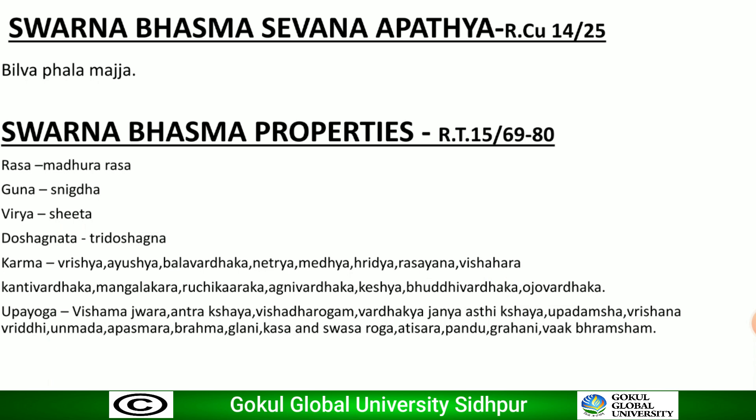The properties of Swarna Bhasma are: Rasa — Madhura; Guna — Snigdha; Veerya — Shita; Doshaghna — Tridoshagna. Karma includes Vrushya, Ayushya, Bala Vardhaka, Netriya, Medhya, Hruddhya, Rasayana, Vishahara, Kanti Vardhaka, Mangalakara, Agni Vardhaka, Keshya, Buddhi Vardhaka, and Ojo Vardhaka. It is commonly used in Vishamajwara, Akshaya, Visha Roga, Janya Sthikshaya, Upadamsha, Vrushna Vriddhi, Unmada, Apasmara, Brahma, Glani, Kasa, Shwasa Roga, Atisara, Pandu, Grahani, and Bhag Brahmsham.